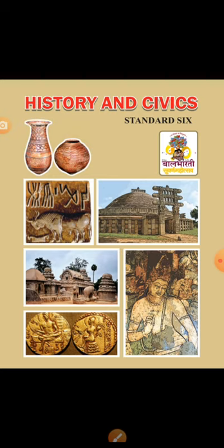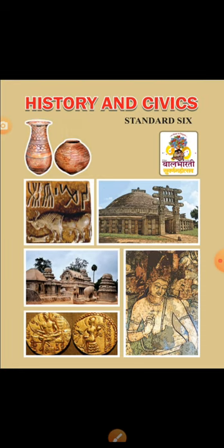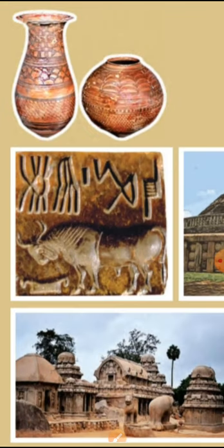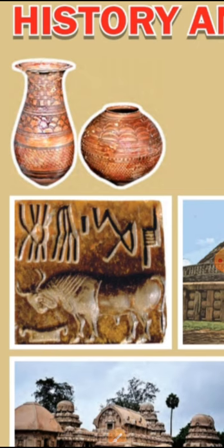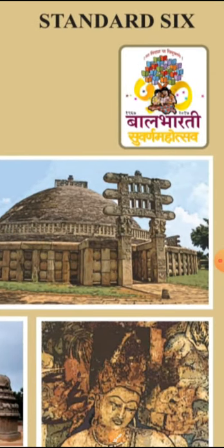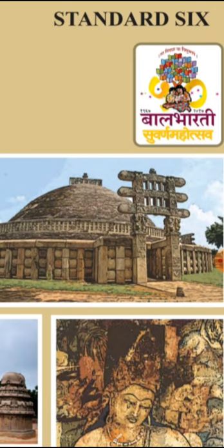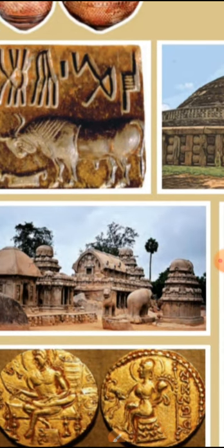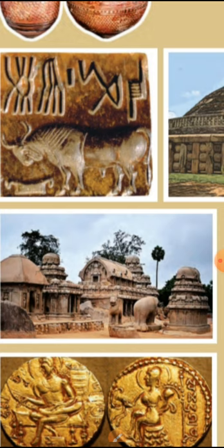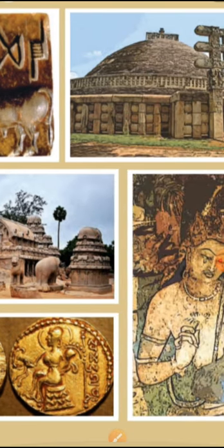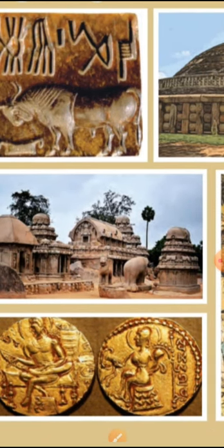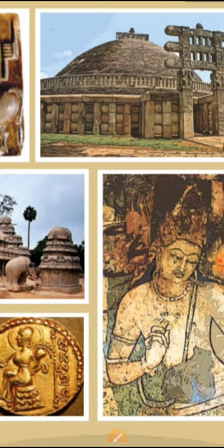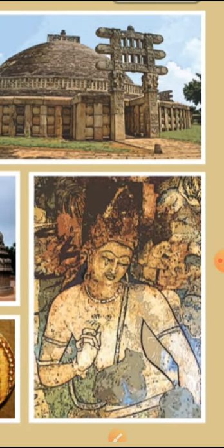Here on this page you can see the first one shows seals. On the top there are pots, the stupa of Sanchi, the ratna or chariot temples of Mahabalipuram, gold coins of Samudra Gupta, bodhisattva of Padma Pani, and Ajanta.